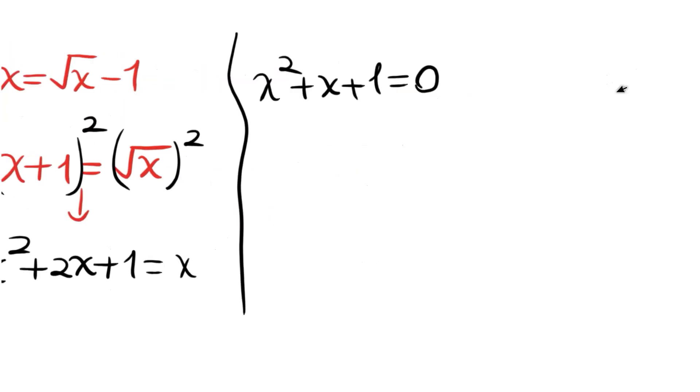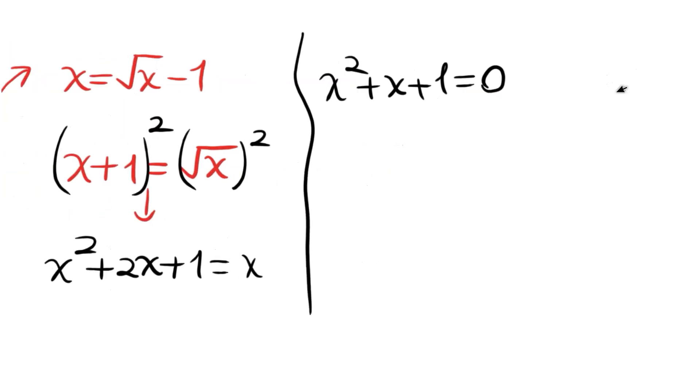Using the quadratic formula, we will find x = (-1 ± √(1² - 4·1·1))/(2·1).